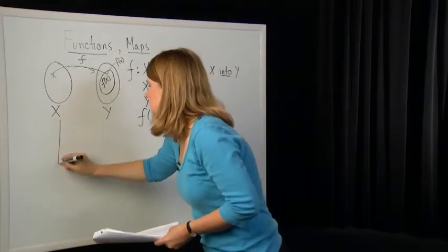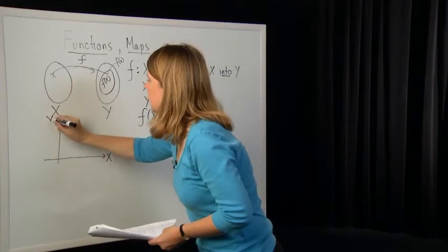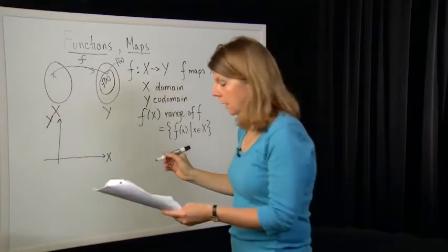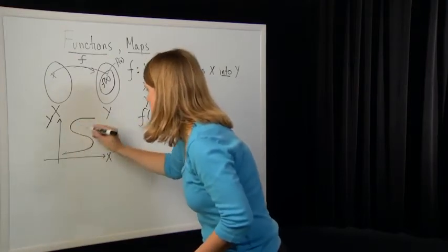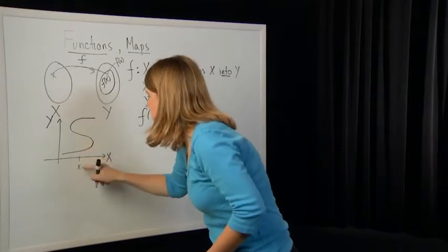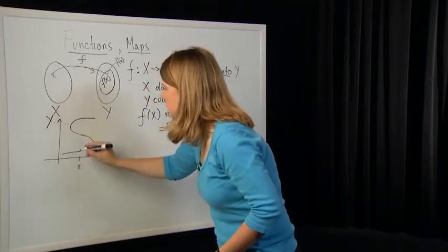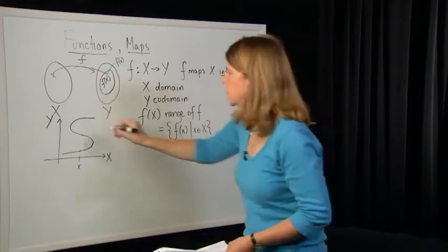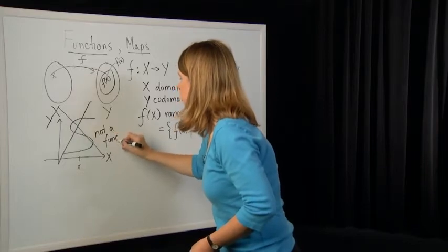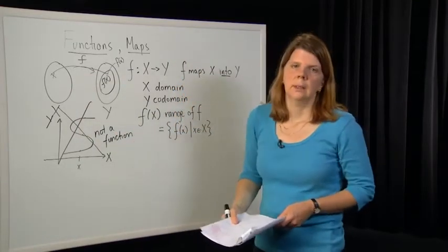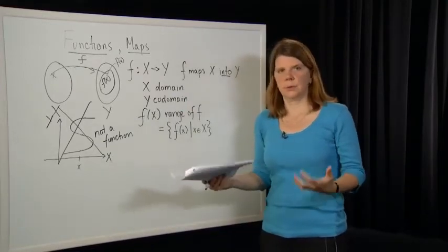This uniqueness requirement disallows things like the following. Suppose the domain is the real line and the codomain is the real line. We don't allow relationships that look like an S-curve, where for a particular x you have three values of F associated with it, and those three values are not equal to each other. That is not a function.